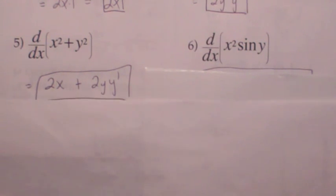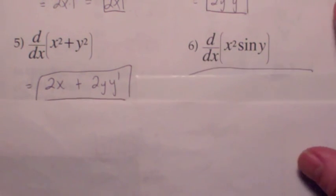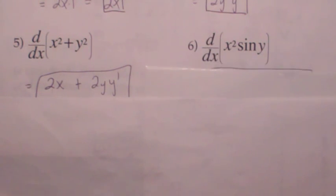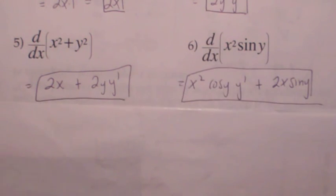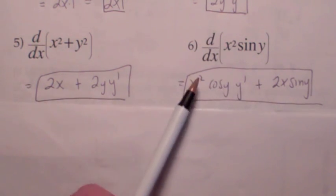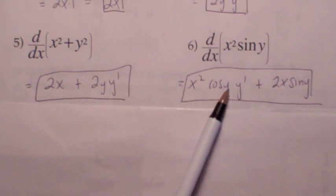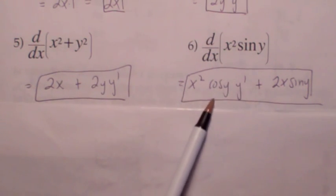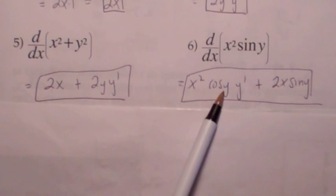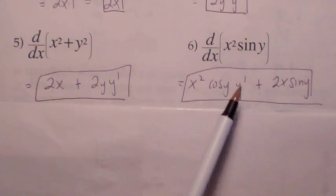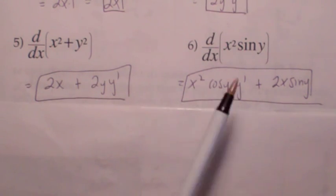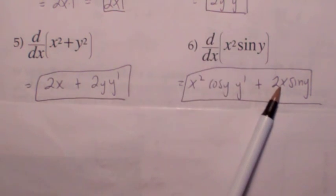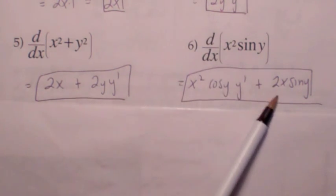What's the derivative of x² times sine of y with respect to x? Product rule. You keep the first one fixed and take the derivative of the second with respect to x, so the derivative of sine y with respect to x is cosine y times y-prime. Plus the derivative of the first with respect to x, you get 2x times sine y.